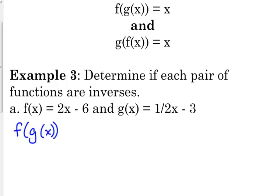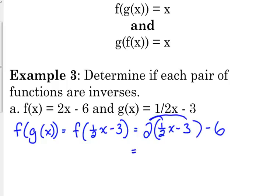Okay, so f of g of x is going to be f of 1 half x minus 3. So my f function was 2 times x minus 6. Remember how we do this. Put parentheses where the x was. Plug in the expression you're plugging in. Then we need to simplify by distributing the 2. So 2 times 1 half is 1. So that's x. 2 times negative 3 is negative 6. And we subtract 6 again. So that gives us x minus 12.